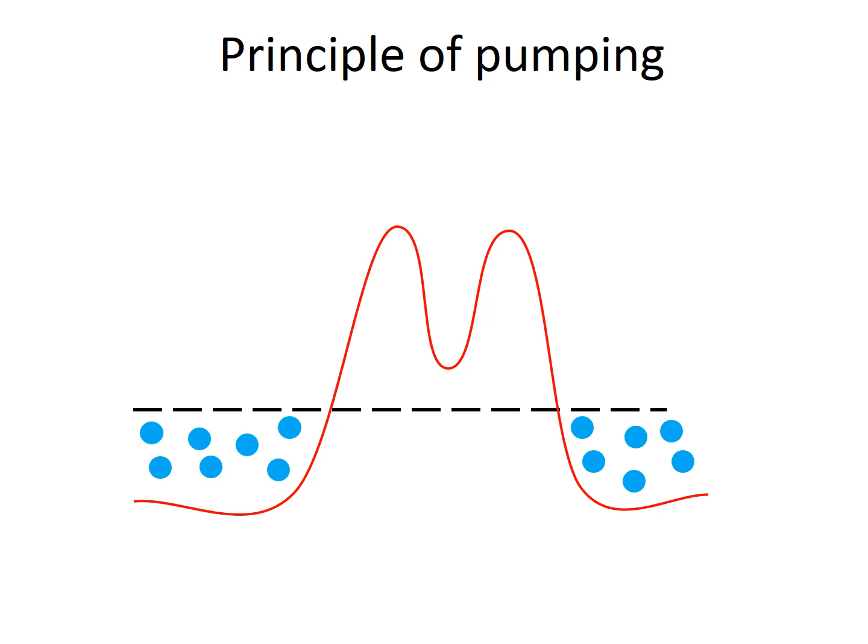The pumping principle in our quantum dot pump is as follows: We lower the left potential barrier and the potential of the dot and let the electron enter the dot. Then we ramp up the left barrier and raise the potential of the dot so that the trapped electron tunnels to the right.